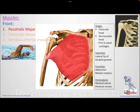This muscle is attached to the lateral lip of the bicipital groove — I'll explain how to remember the insertion when we cover other muscles. So what does this muscle do? It mainly performs adduction, bringing the arm medially toward the body, and causes internal rotation.